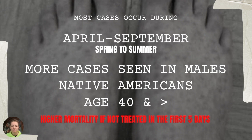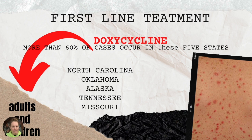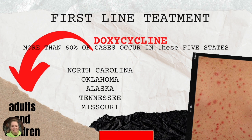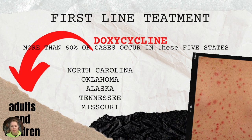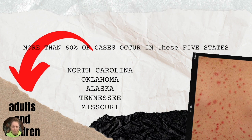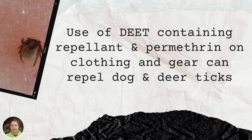Most cases of Rocky Mountain Spotted Fever occur during April to September. More cases are seen in males, specifically Native Americans, age 40 and above. Very important: higher mortality if not treated within the first five days. First-line treatment is doxycycline. More than 60% of cases occur in five states: North Carolina, Oklahoma, Alaska, Tennessee, and Missouri. Importantly, for both adults and children, we use doxycycline regardless of allergy because the good outweighs the bad. Use DEET-containing repellent and permethrin on clothing to repel dog and deer ticks.